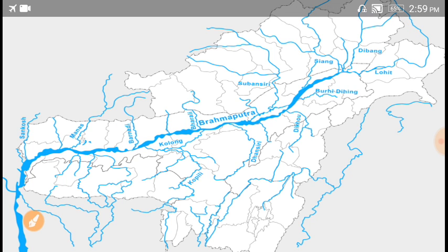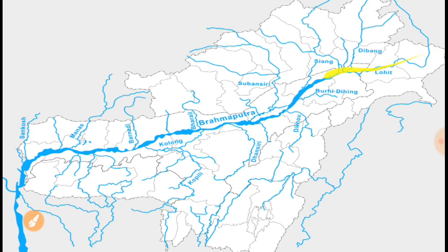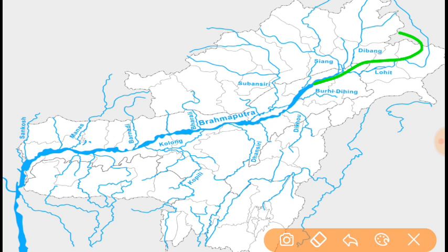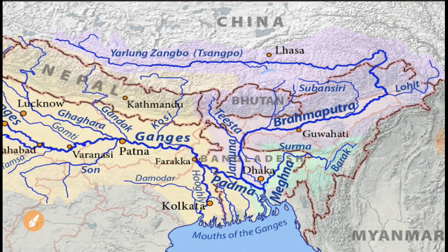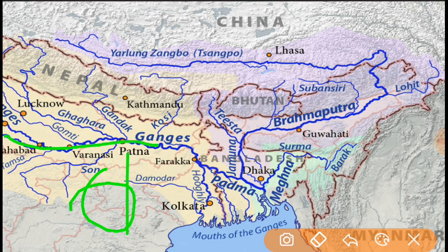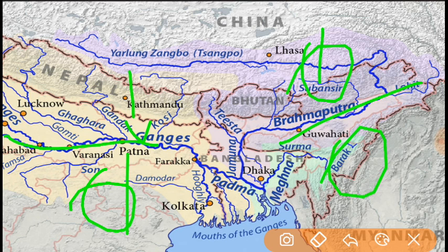The river flow is now set to this situation. The tributaries are right bank and left bank.